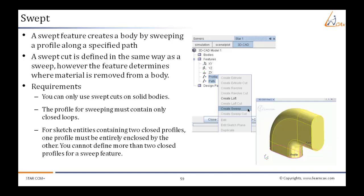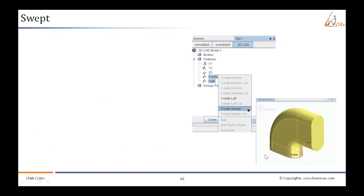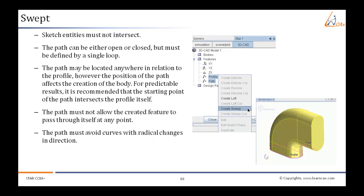For predictable results, it is recommended that the starting point of the path intersects the profile itself. The path must not allow the created feature to pass through itself at any point. The path must avoid curves with radical changes in direction.